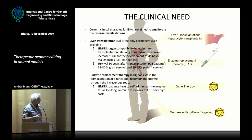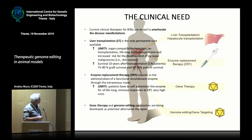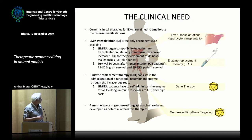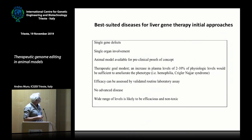Enzyme replacement therapy is an approach possible in some diseases, but it has limits: a recombinant enzyme is given to the patient to replace the missing activity, but it must be administered for life, the patient may have an immune response to the recombinant protein, and the costs are really very high — we are talking about 300,000–400,000 euros per year per patient. So one possibility is gene therapy and genome editing, which in one shot can potentially correct the problem.